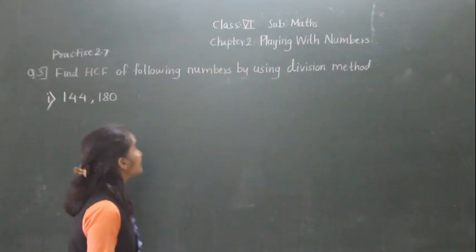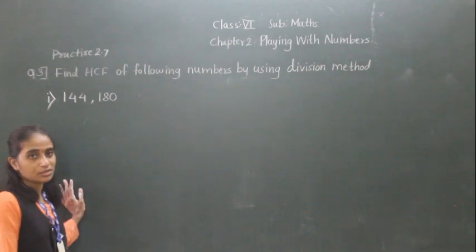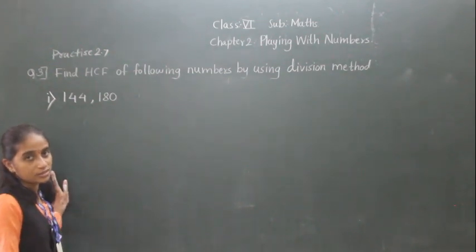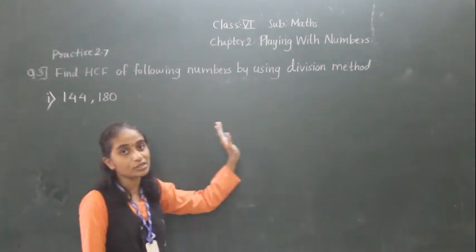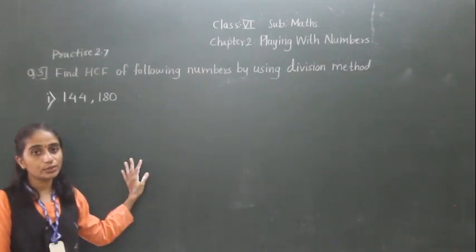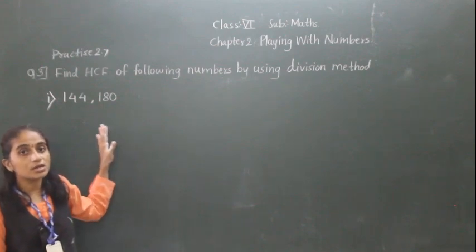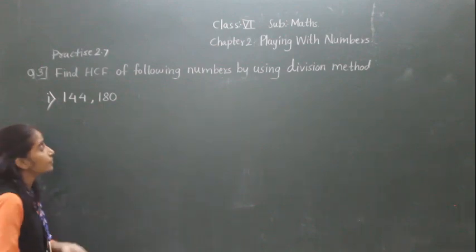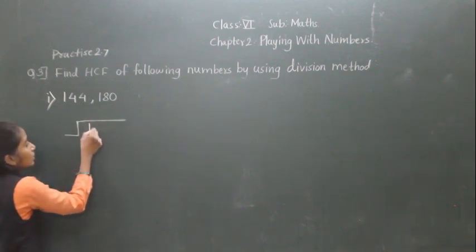Hello everyone. Let's learn to find HCF for the following numbers using the division method. Yesterday we learned to find HCF by the prime factorization method. Now we are going to use the division method today. In the division method, what we are going to do is divide the greater number by the smaller number. The first step is to divide the greater number by the smaller number.